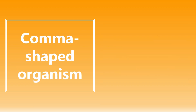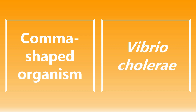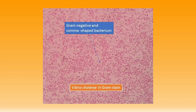Next one here: a comma-shaped organism. If they give you that description or show you a picture that looks like that, they are trying to get at Vibrio cholerae. Here's a quick picture — the one highlighted really shows a comma shape, as well as a bend in some of the other organisms. So gram-negative, comma-shaped bacterium means they're talking about Vibrio cholerae.